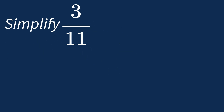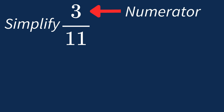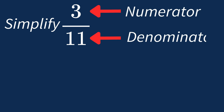When simplifying a fraction like 3 over 11, we need to check if there's a common factor between the top number, the numerator, and the bottom number, the denominator. First, let's list out the factors for each.